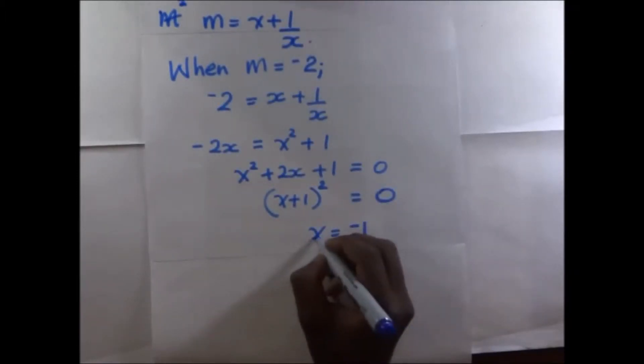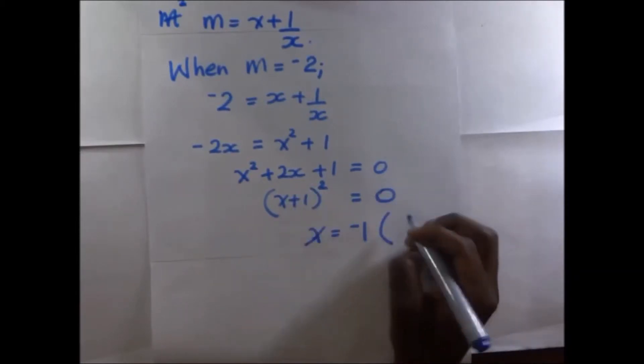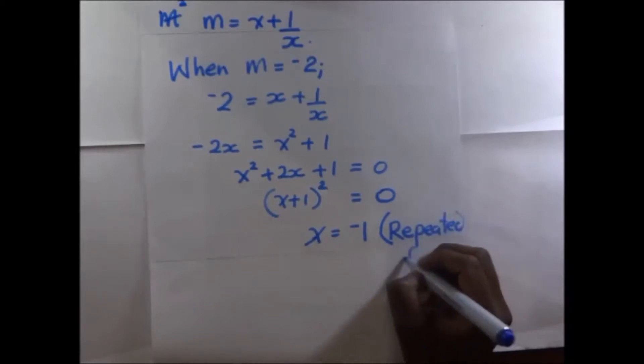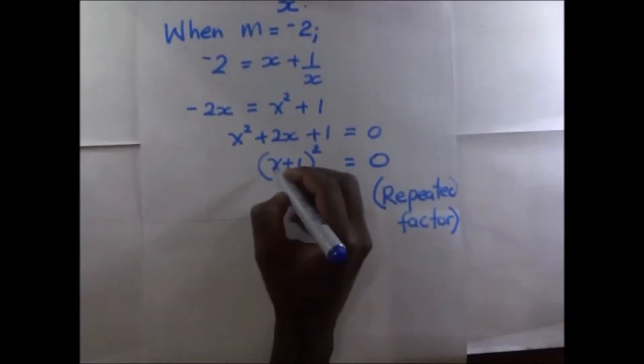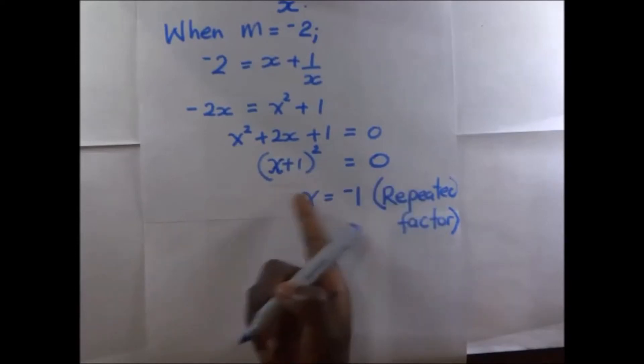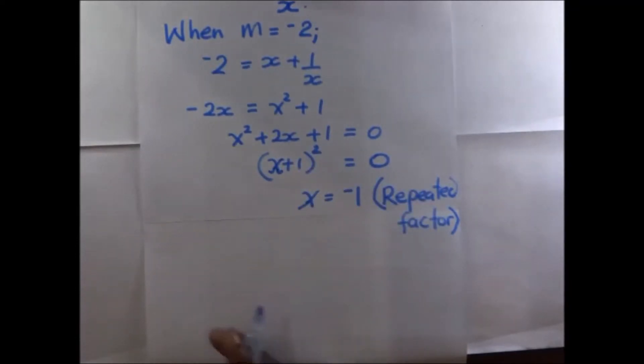Our value of x there is going to be negative 1, and that is one of the factors of that polynomial. And so this is going to be a repeated factor. It is a repeated factor because it's both positive and negative 1.